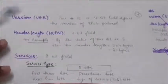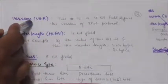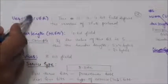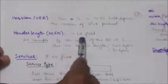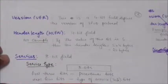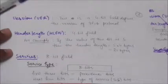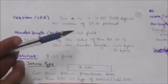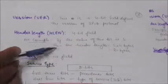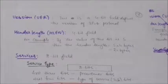The first field is Version — a 4-bit field that defines the version of the IPv4 protocol; currently the version is 4. The next field is Header Length — also a 4-bit field that defines the total length of the datagram header in 4-byte words. When the value of this field is 5, the header length equals 5 × 4 bytes, which is 20 bytes.